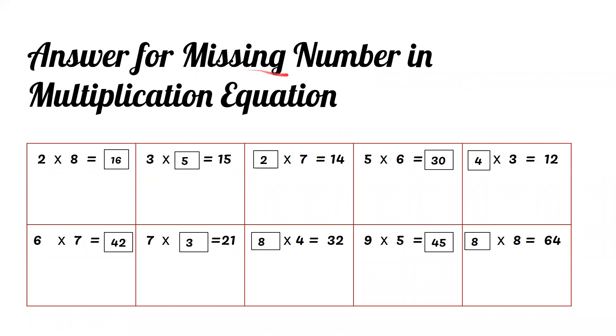Answer for missing number in multiplication equation. 4 times 3 equals 12, 6 times 7 equals 42, 7 times 3 equals 21.